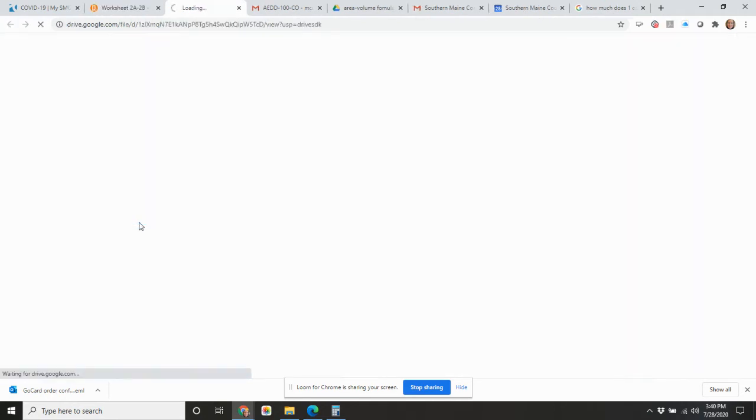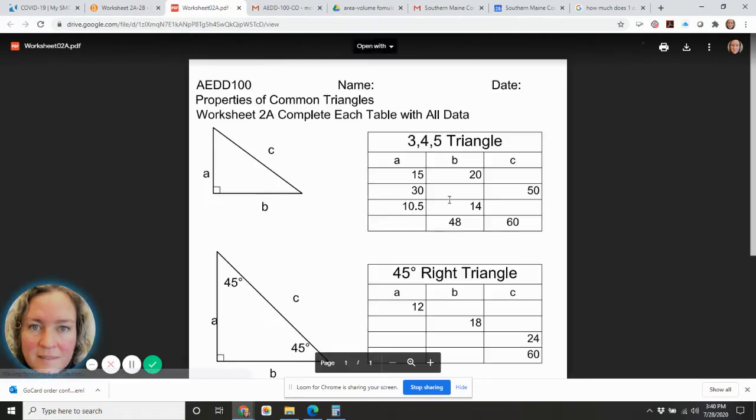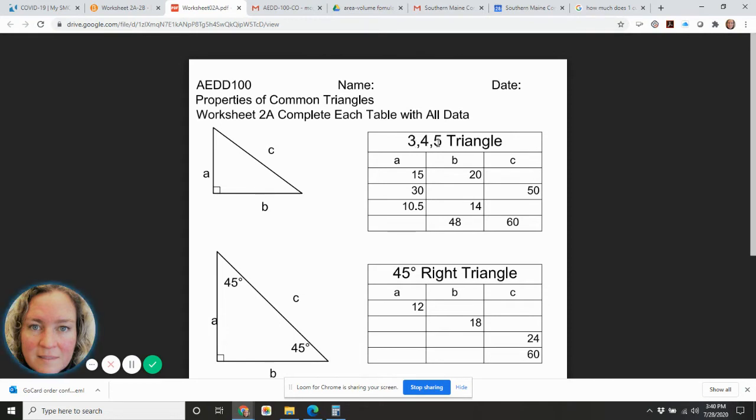This is the worksheet itself and what you're going to do is just print this out and you can go ahead and fill it in by hand. In this first example up here you're calculating 3, 4, 5 triangles. So this is a little drawing of a 3, 4, 5 triangle and you've been given two of the numbers and you've got to figure out what's the missing element. Each one of these answers is based on the fact that you're working with the properties of a 3, 4, 5 triangle.